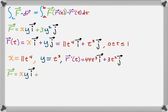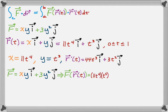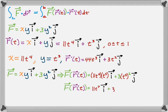Since f is xy·i plus 3y²·j, we know that f of r of t is found by replacing every x with 11t⁴ and every y with t³. So we get 11t⁴ times t³ for the i component, plus 3 times (t³)² for the j component. We can simplify that to get 11t⁷·i plus 3t⁶·j.